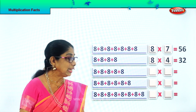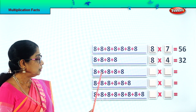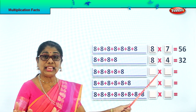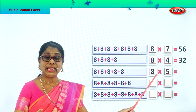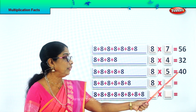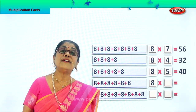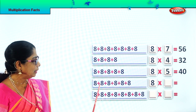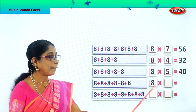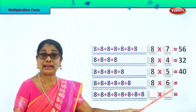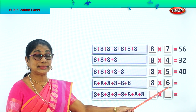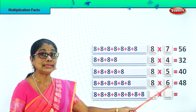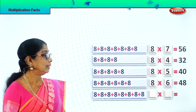Let's look at that. 1, 2, 3, 4. 8 five times. 8 fives are 40. What is 8 fives are? 40. Very good. 8 fives are 40. Next, you have 8. How many times? 1, 2, 3, 4, 5, 6. Eight sixes are. What is eight sixes are? Eight sixes are forty-eight.